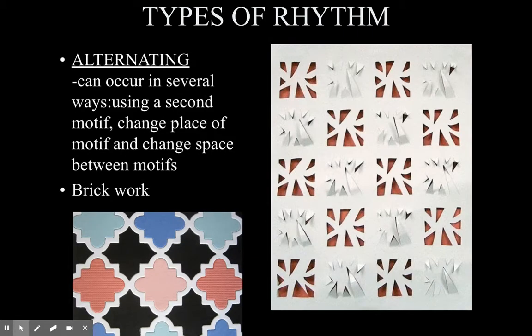Next, we have alternating rhythm. Alternating rhythm is a planned rhythm — not like a regular rhythm, but with planned, regular changes. Alternating can occur in several ways: you can use a second motif that goes back and forth, change the placement of the motif, or change the space between motifs, but it's completely planned. Think about brickwork — how it changes but is planned. On screen we see two motifs that alternate like a checkerboard, and a checkerboard would be a perfect example to draw in your empty box.